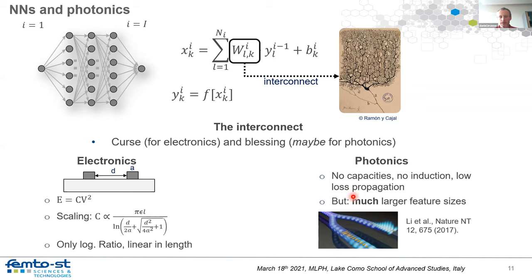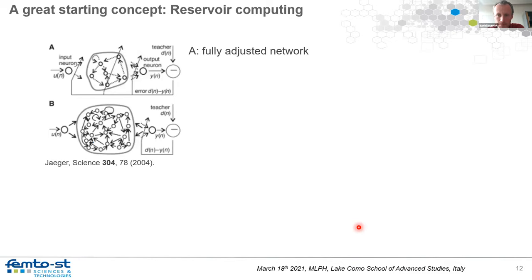There is a second layer to the problem: feature size. Electronics and photonics are determined by the wave package of the information carrier. In electronics that's the de Broglie wavelength, on the order of nanometers; in photonics it's hundreds of nanometers. This introduces a different scale. It may therefore be a very good idea to implement neural networks not on substrates optimized for digital computing over decades, but to start fresh and implement these networks as actual networks.